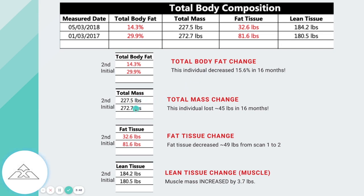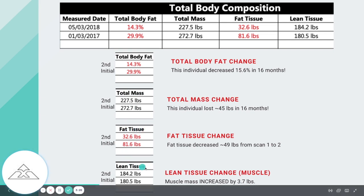Total mass went down 45 pounds in 16 months. I'm going to go over what you can be looking at for yours. We look at total body fat change from initial and onward, and then total mass, fat tissue, and lean tissue.